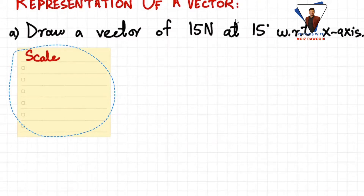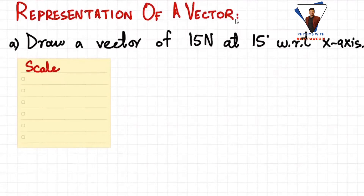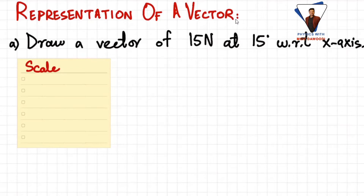When deciding which scale to use, keep in mind that your scale should always start from unity — meaning one centimeter equals whatever measurement you choose. The scale should not be too large or too small. For example, if one centimeter equals three newtons, the vector will be very short; if one centimeter equals one meter, the vector will be too large to fit on your paper.